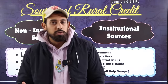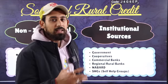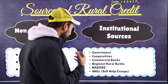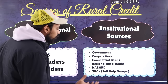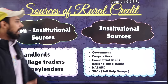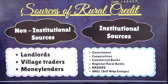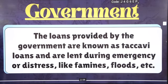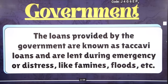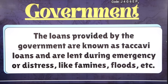Institutional sources are formal bodies and institutions — the government, cooperatives, commercial banks, and regional rural banks. These institutions provide us with structured credit support.